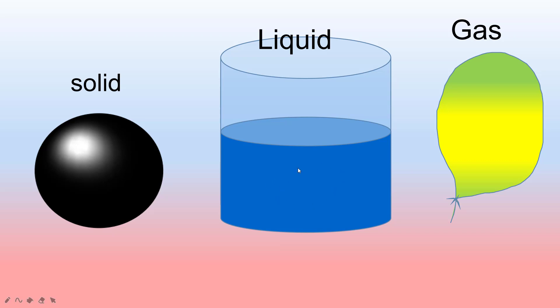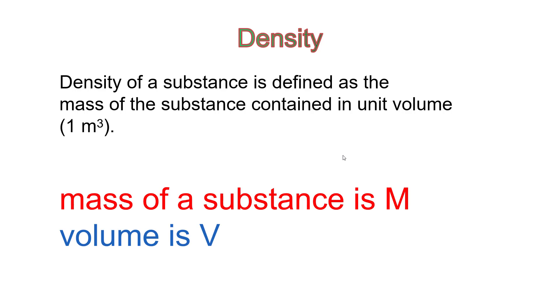The number of molecules present per unit area in liquid is more compared to that of gas. The density of solid is more compared to that of liquid and gas. And hence we can easily define the word density. Density is defined as mass per unit volume. Density of a substance is defined as the mass of the substance contained in unit volume — volume in meter cube and mass in kilogram. Mass is denoted as M and volume is denoted as V.